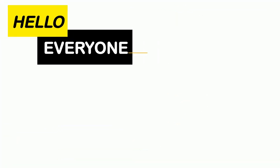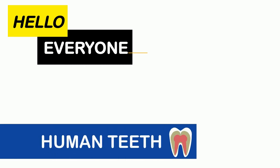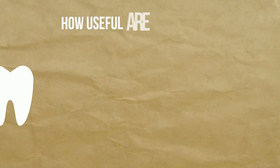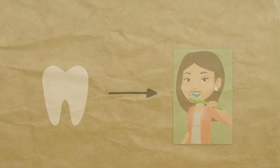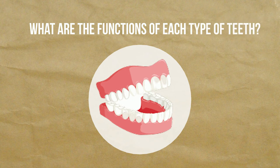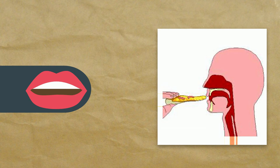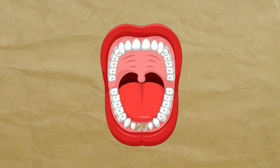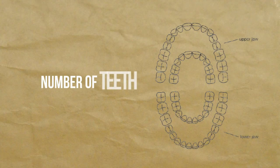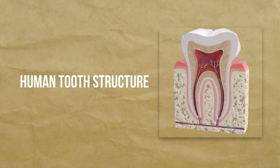Hello everyone! Today's topic is human teeth. We will be learning about how useful teeth are for us, what types of teeth we have, what the functions of each type are, how we can avoid tooth decay, and more. This lesson on human tooth structure for kids teaches you all what you should know about your teeth — types, number, functions, structure, and how to protect them.